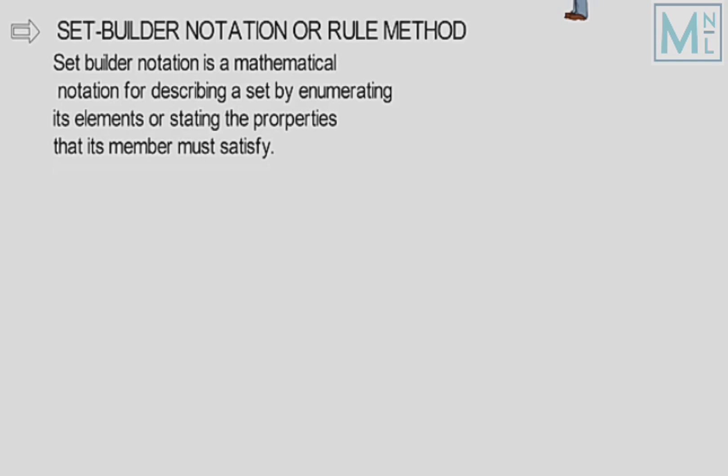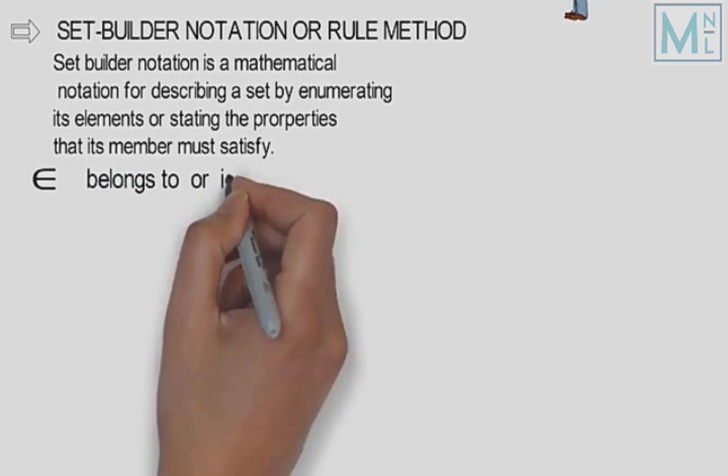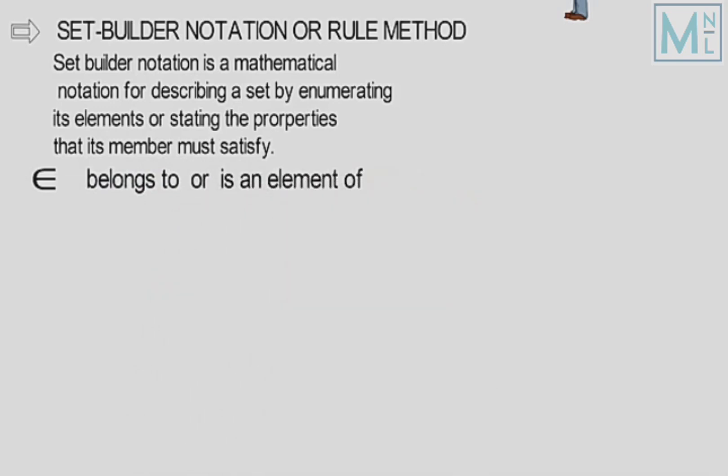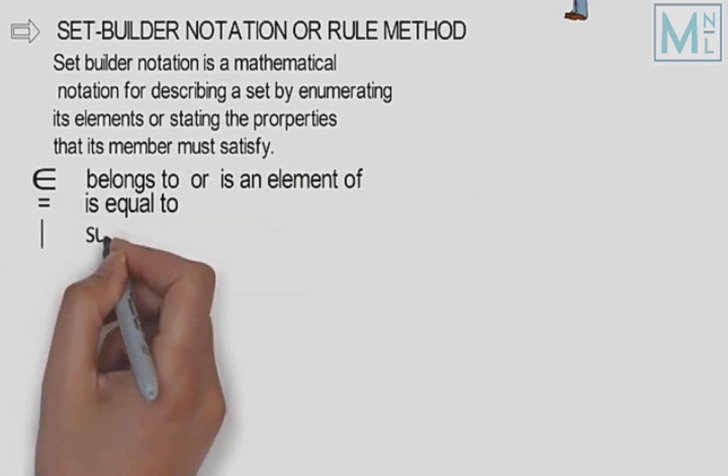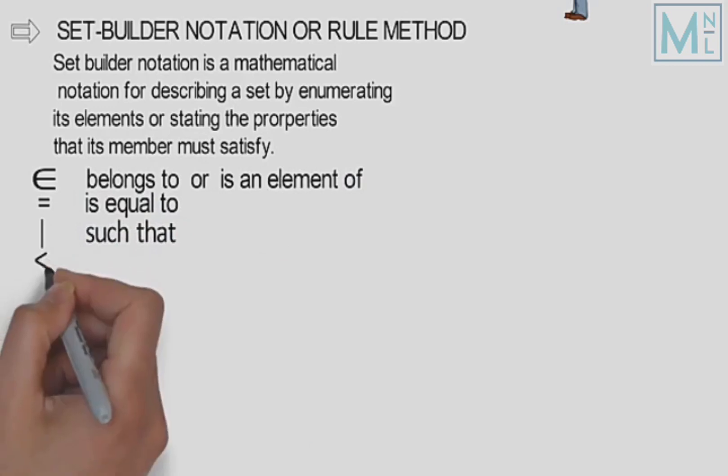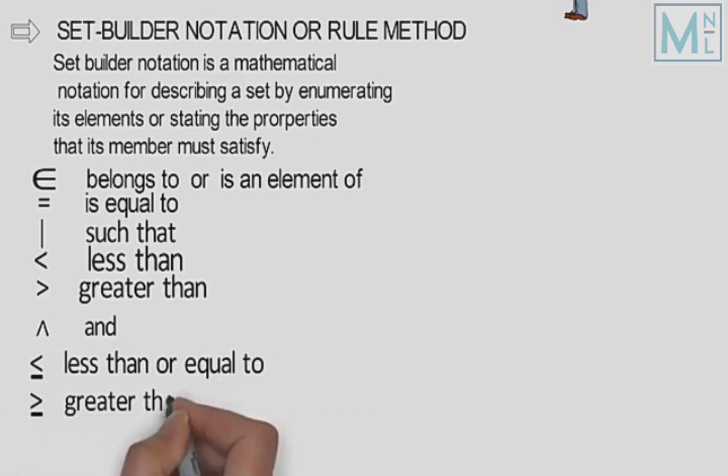Is method ko samajhne ke liye hamein kuch symbols ke bare mein janna bahut zaroori hai. Is symbol ko padhenge 'belongs to' or 'is an element of', matlab ye ke ye taluk rakhta hai. Is symbol ko padhenge 'is equal to', matlab ye ke ye barabar hai. Isko padhenge 'such that'. Is symbol ko padhenge 'less than', matlab isse kam. Is symbol ko padhenge 'greater than', matlab isse zyada. Is symbol ko padhenge 'and', matlab aur. Is symbol ko padhenge 'less than equal to'. Is symbol ko padhenge 'greater than equal to'.